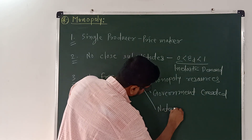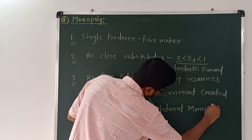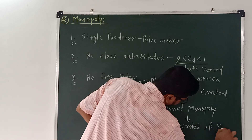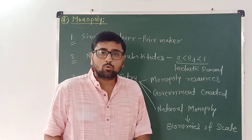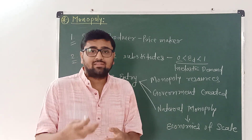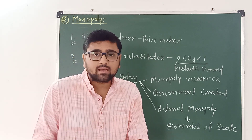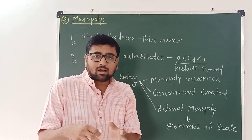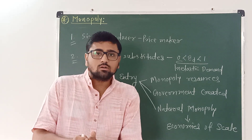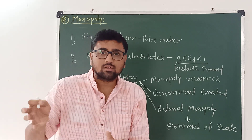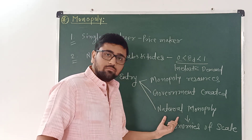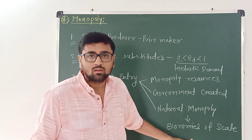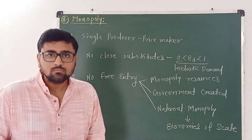Third is natural monopoly due to economies of scale. In this case, one firm has such natural monopoly power that it can produce commodities at lower and lower cost. So if another firm enters the market, cost will increase. It is better not to give market share to the other firm because the single firm can produce the commodity at lower cost due to economies of scale. These are the characteristics of the monopoly market.